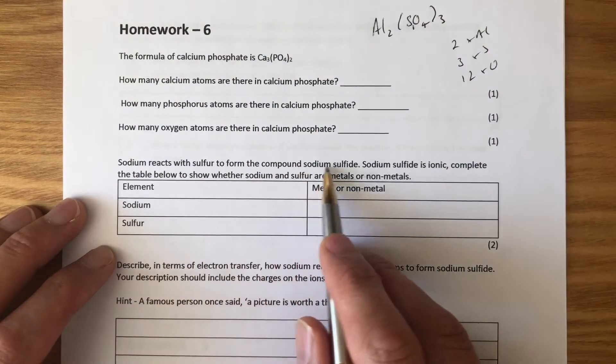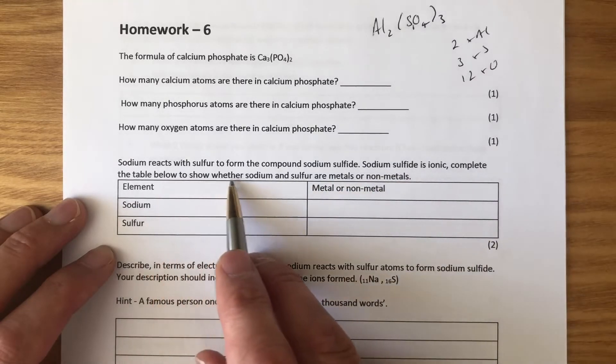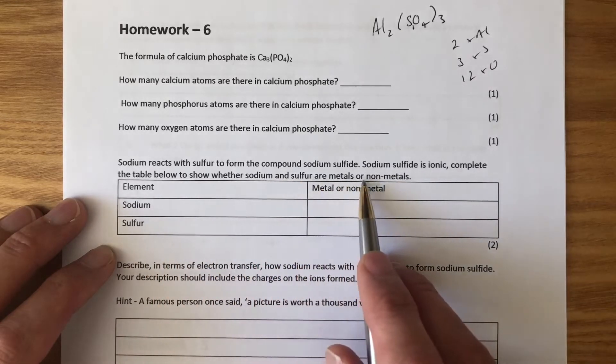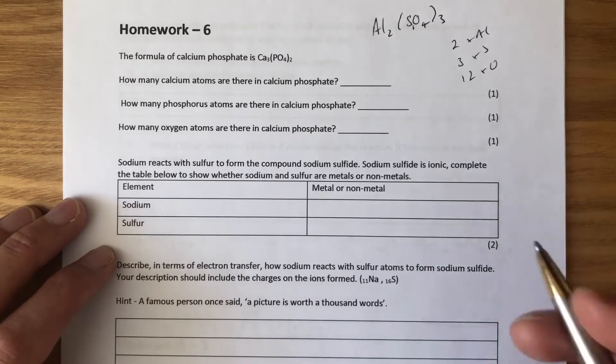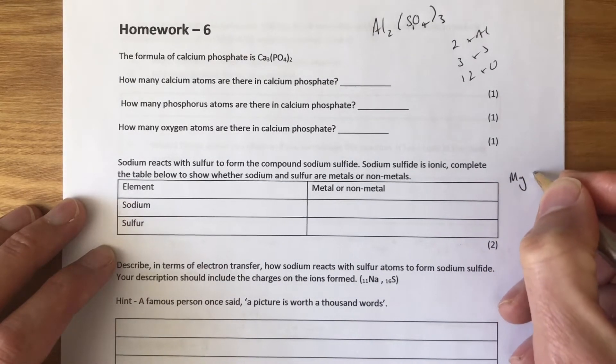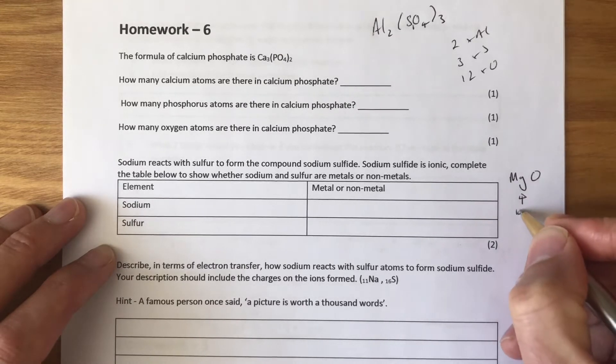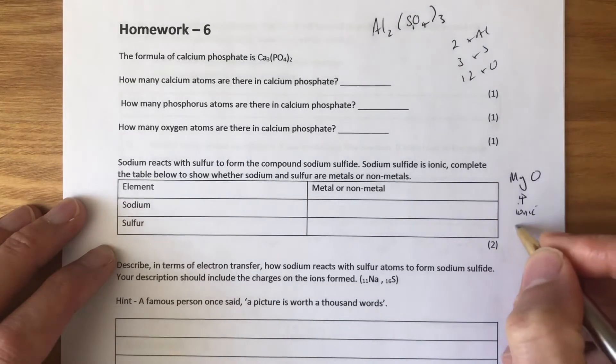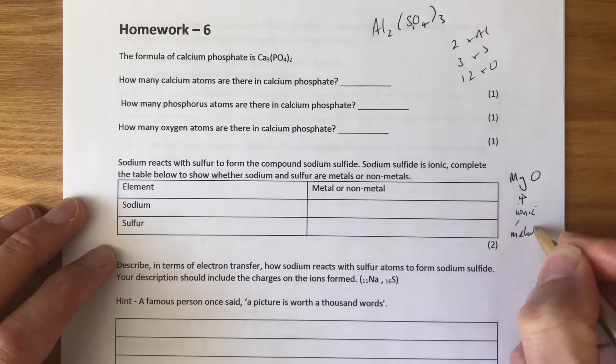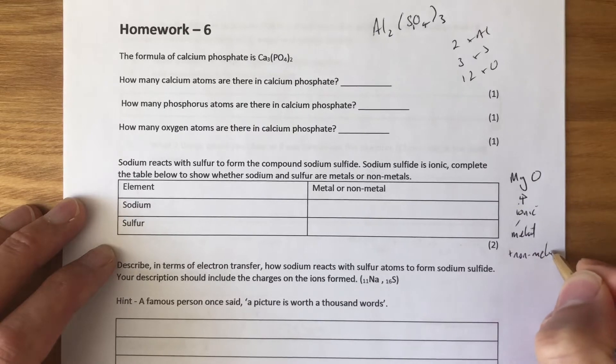Sodium reacts with sulfur to form the compound sodium sulfide. Sodium sulfide is ionic. Complete the table to show whether sodium and sulfur are metals or non-metals. Well, let's do magnesium oxide as an example. Magnesium oxide, that's also ionic. We know it's ionic because ionic compounds contain both a metal and a non-metal. That tells us it's ionic bonding.